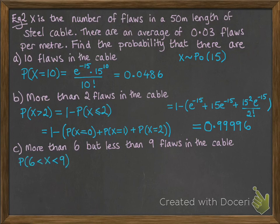And then more than 6 but less than 9 flaws in the cable. We're not including 6 and we're not including 9 because it's strictly more than 6 and strictly less than 9. So that means we can either have 7 or 8 flaws. We work out each of those and add them together.